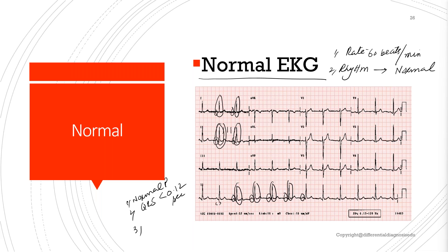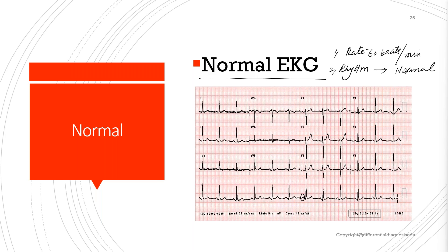Next is axis. For axis, we have to look at lead one and aVF. If the QRS complex in lead one and in aVF are both in the positive direction, then the axis is normal.